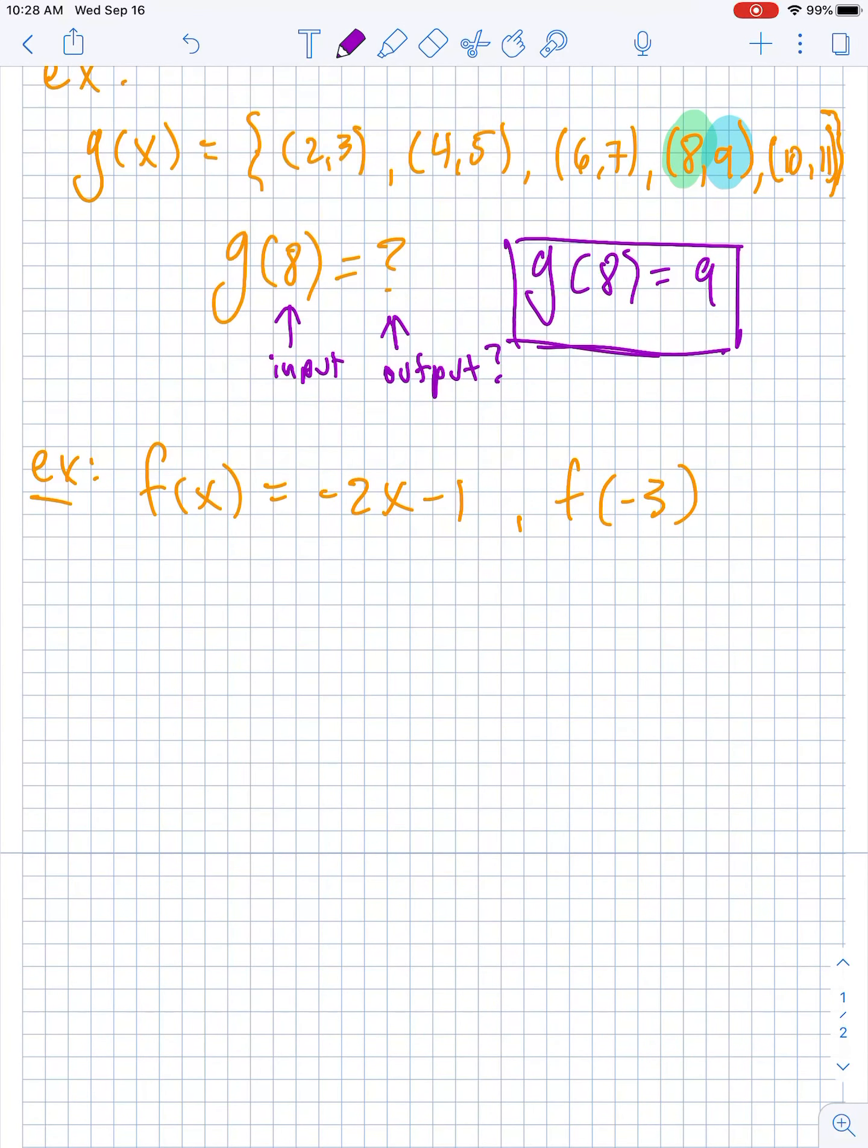This is literally just dropping an input of -3 into the function, so you replace all of the x's in the function with -3. So then -3 times -2 is positive 6, so you get 6 - 1, so this is 5. So that means f of -3 is equal to 5, and that one's all good.